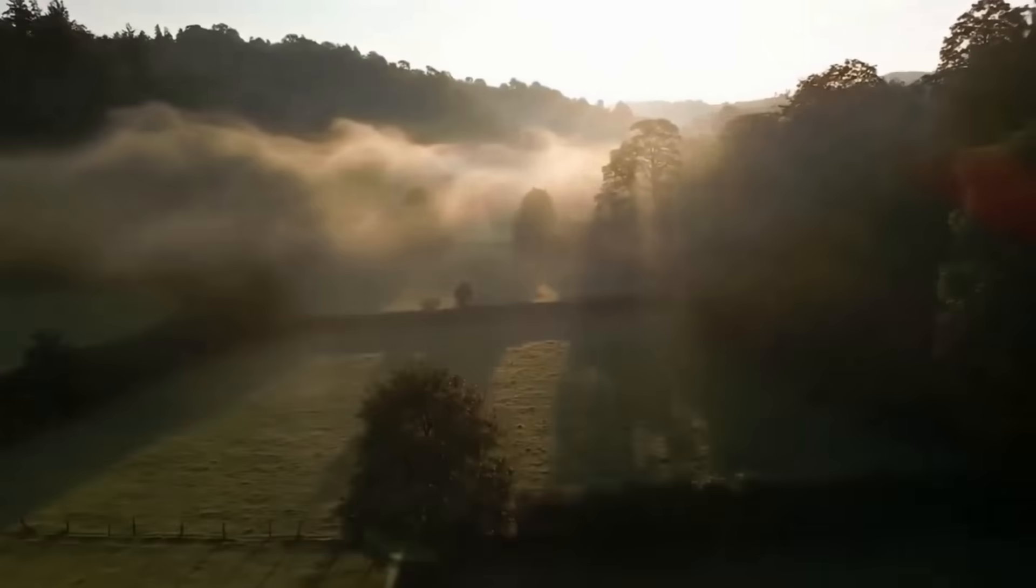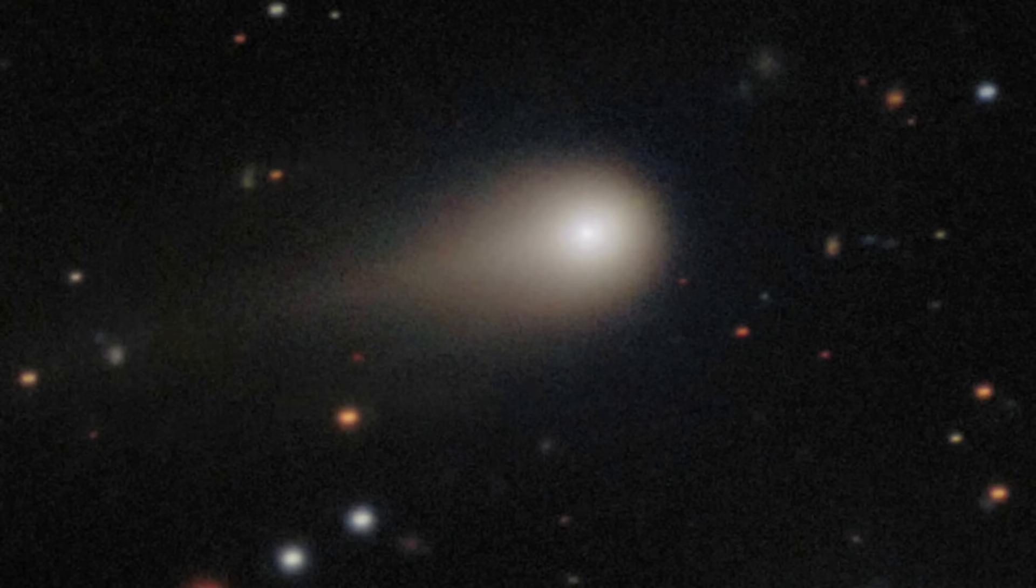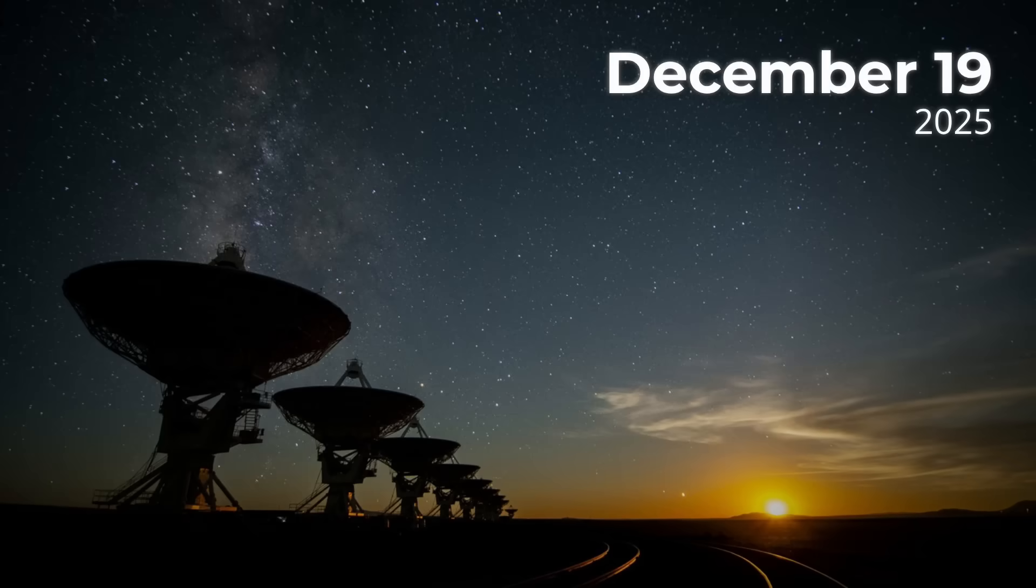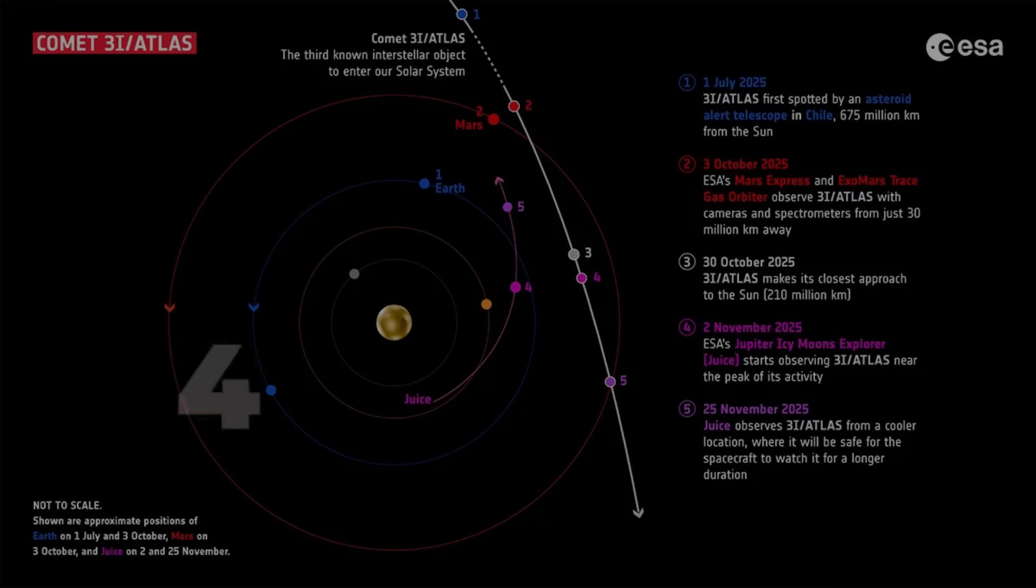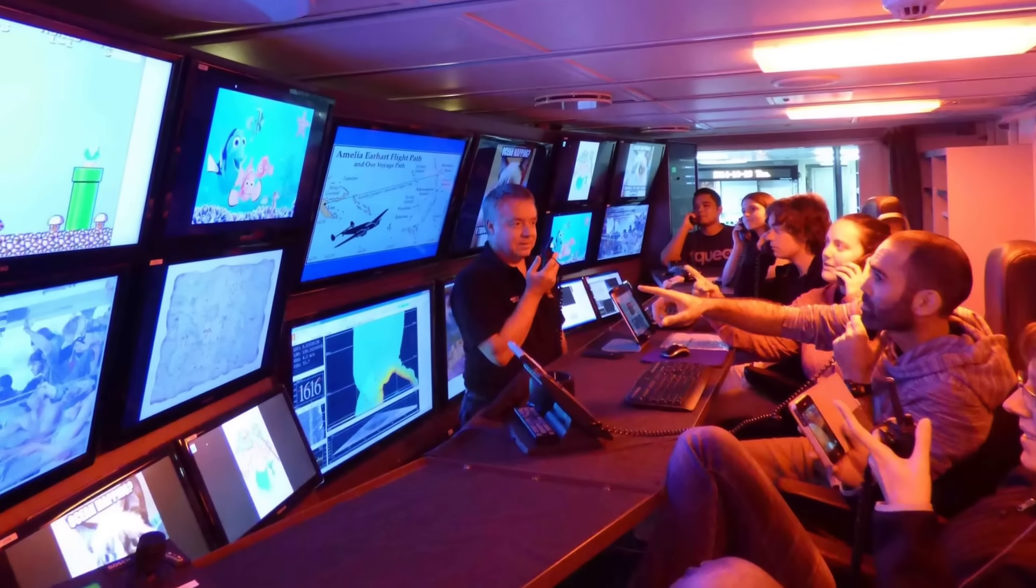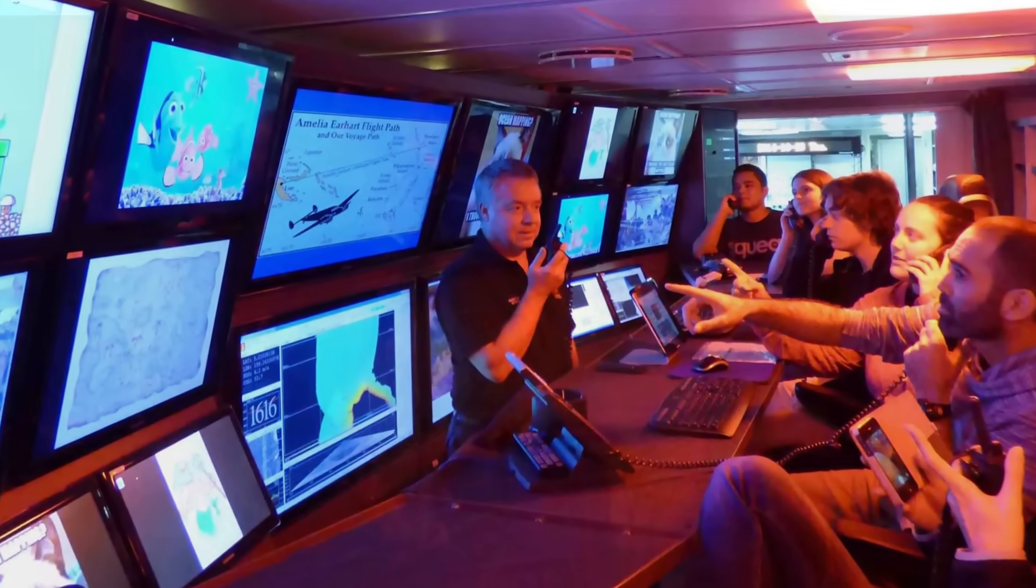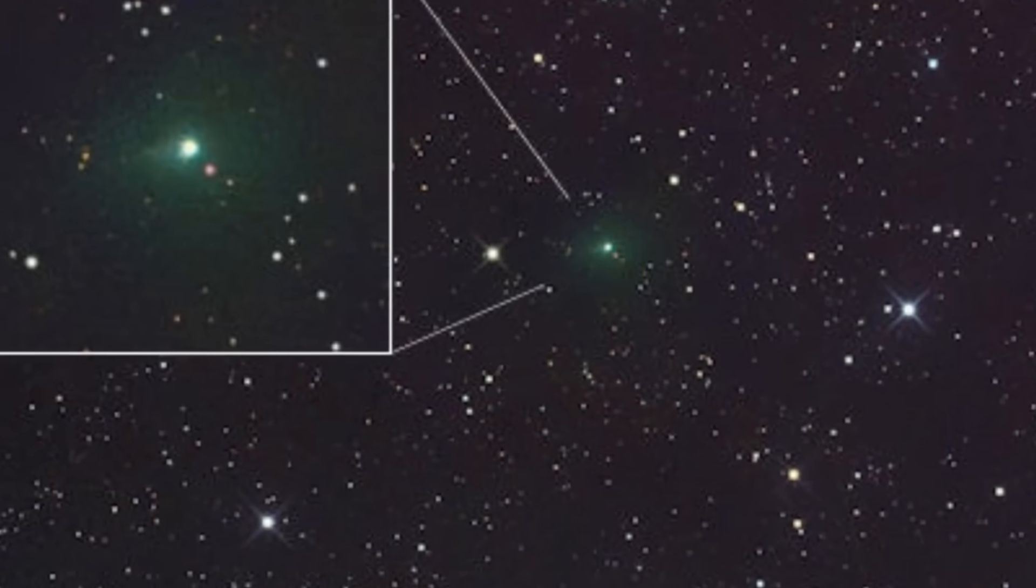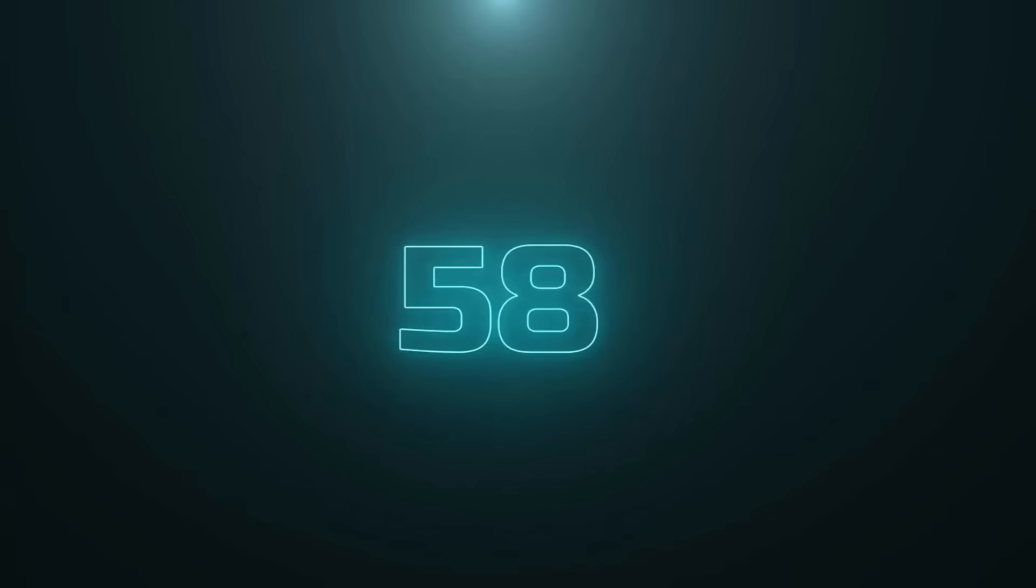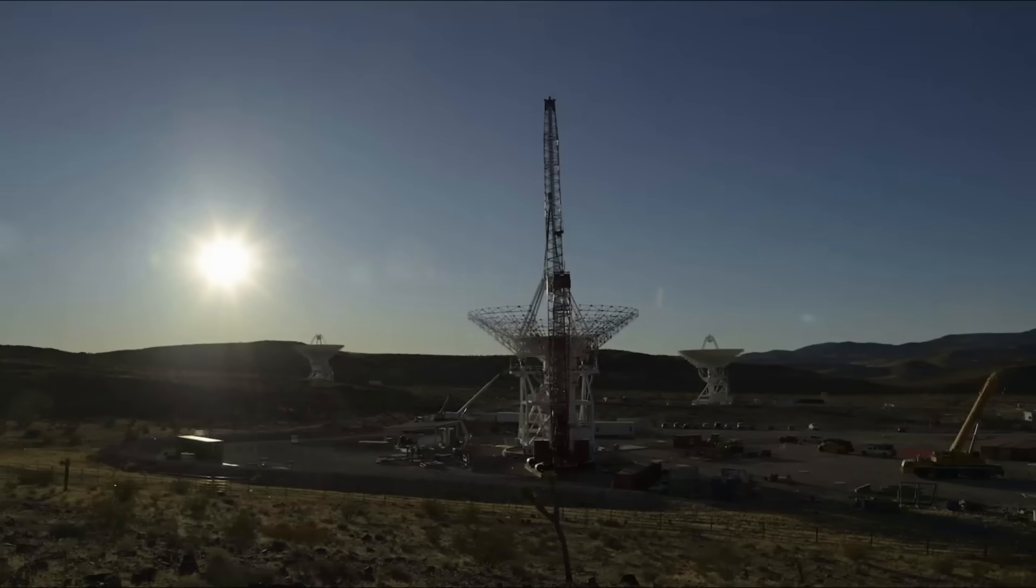So when does the silence break? The recovery window opens in mid-to-late November, as 3i-Atlas emerges from behind the Sun and reclaims a spot in the dawn sky. By then, it will be receding, both in distance and brightness, but still within reach of large telescopes and dedicated amateurs. The calendar's next milestone: December 19th, 2025, when the comet makes its closest approach to Earth—about 1.80 AU just before the winter solstice. Between conjunction and reacquisition, the story is one of anticipation and uncertainty. Every hour lost to the Sun's glare is an hour when the most anomalous interstellar object ever recorded could transform, fragment, or simply fade away, unseen. The scientific clock is ticking, and the world waits for the first signal to break through the solar curtain.